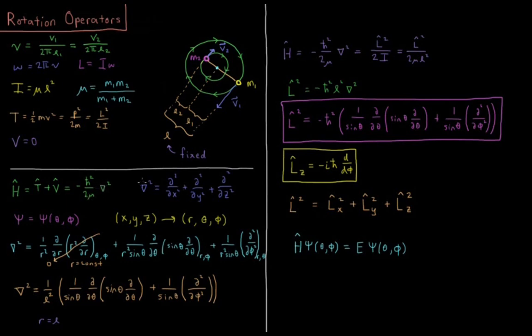Del squared is the sum of the second partial derivative with respect to X, Y, and Z.